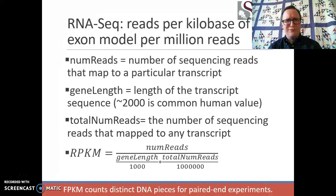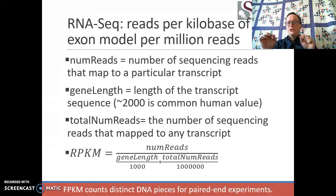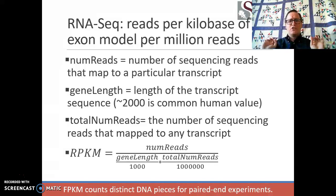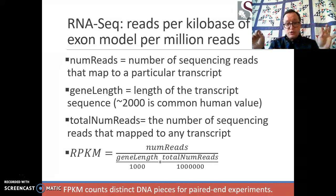RNA-Seq works in a rather different way. RNA-Seq does not produce an analog signal like an intensity. Instead, it produces some number of reads that map to some transcript. You can imagine having a transcript with little patches of sequence covered in some cases quite deeply, and in some cases quite shallowly with reads. How do we quantify the abundance of the entire messenger RNA to summarize across all of these different reads? There are two countervailing effects: a long transcript can map to more reads than a very short transcript.